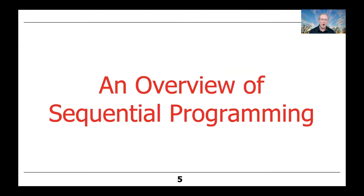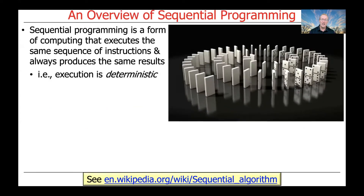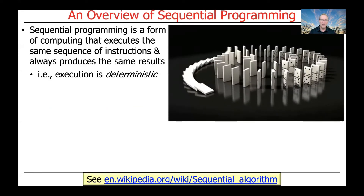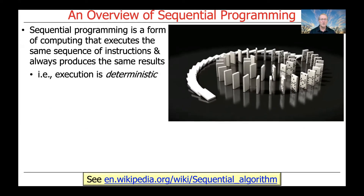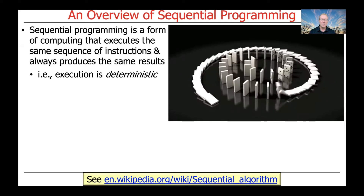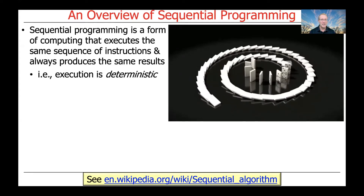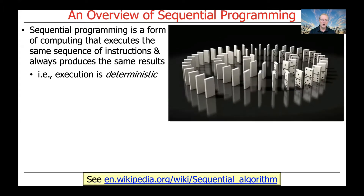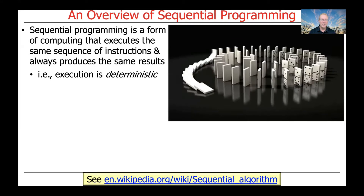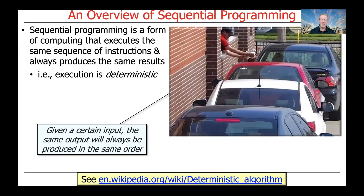Let's begin with an overview of sequential programming. Sequential programming is a form of computing that executes the same sequence of instructions and always produces the same results. Execution is deterministic. In particular, given a certain input, the same output will always be produced in the same order.